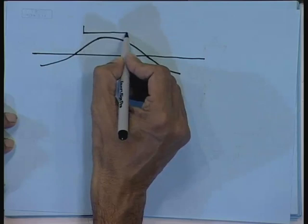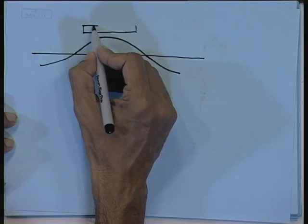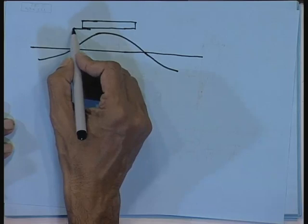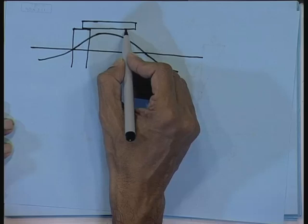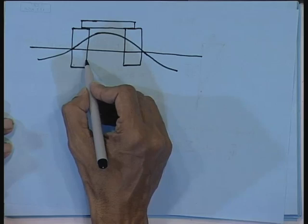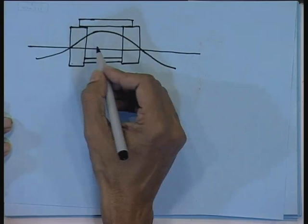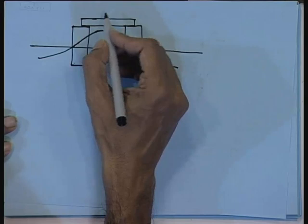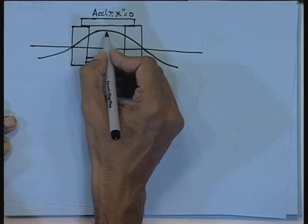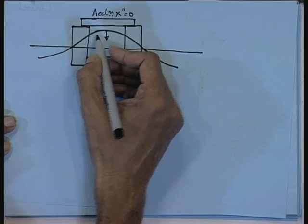Coming to the hydrodynamics part, this is more complicated. The TLP is riding a crest. Say this is your still water level and this is the crest of the wave. You have to calculate the wave particle velocity and acceleration. For all practical purposes, you use the linear wave theory. There are other second-order forces, but those are more complicated. At the crest, the horizontal acceleration is zero. Your water particle acceleration vectors will come outward at a crest.